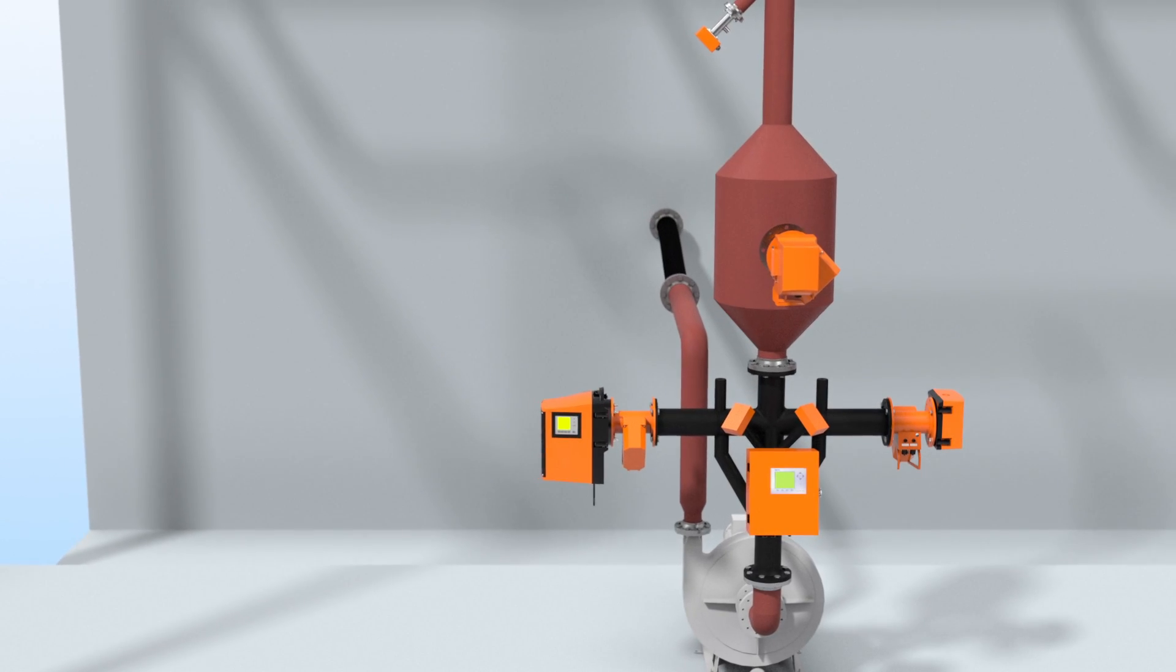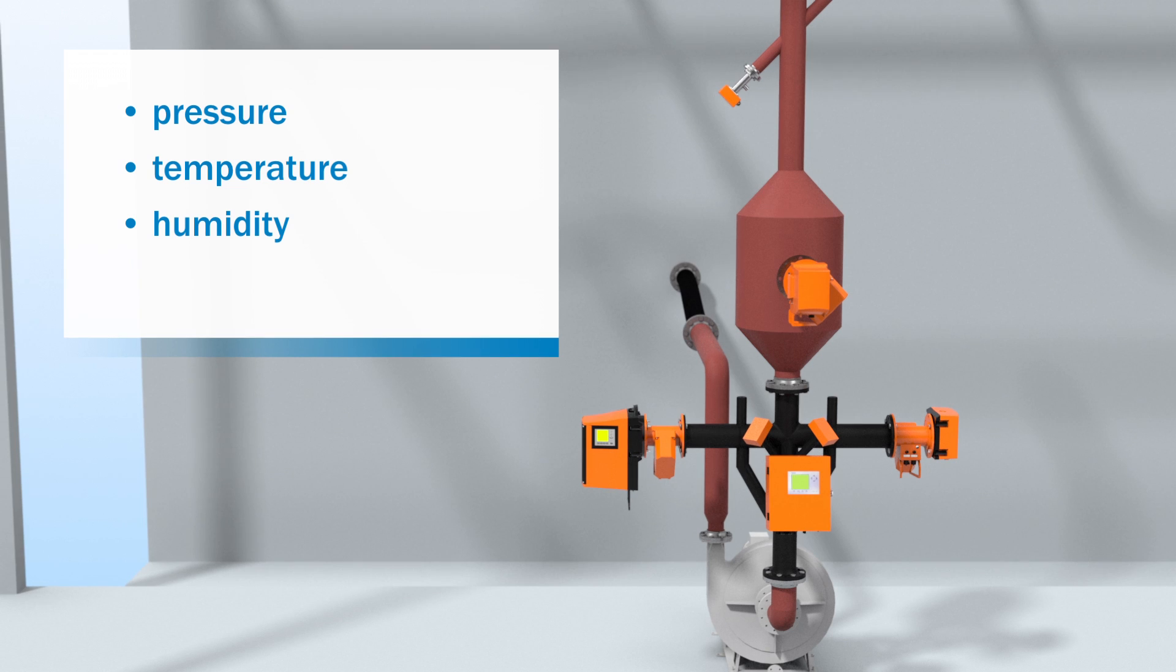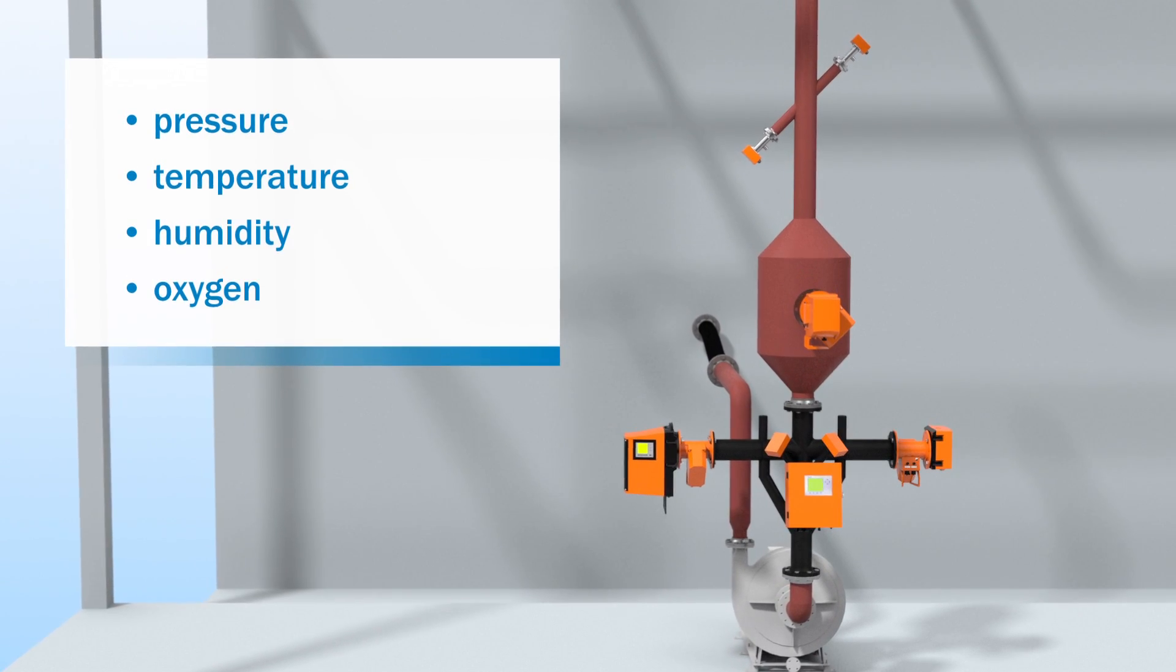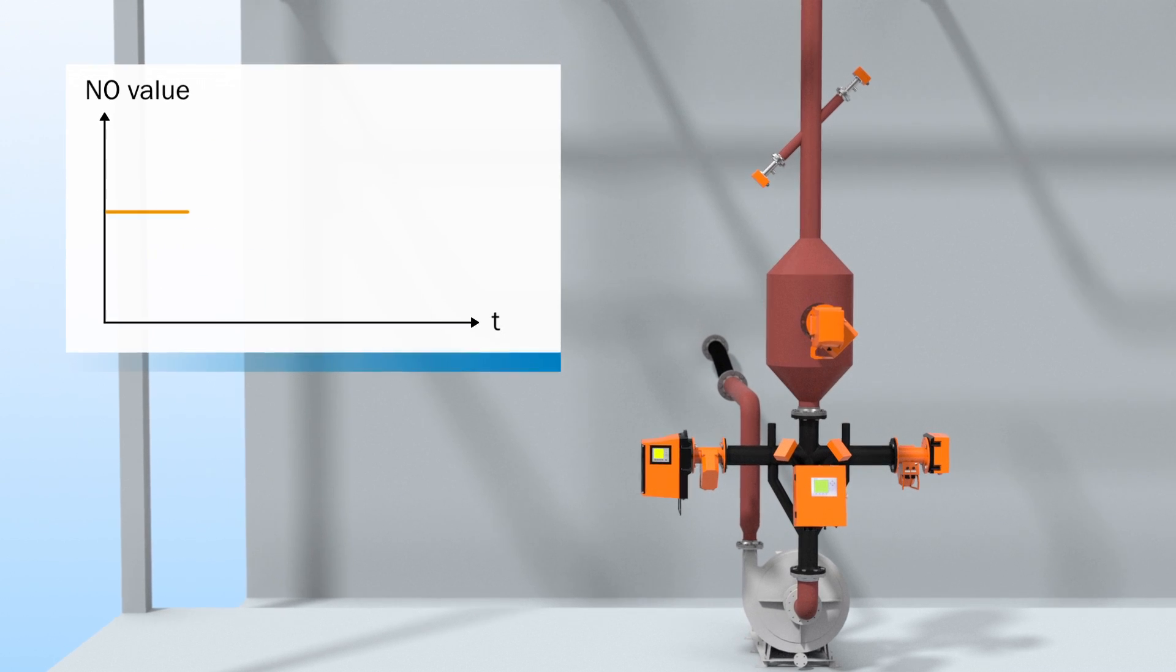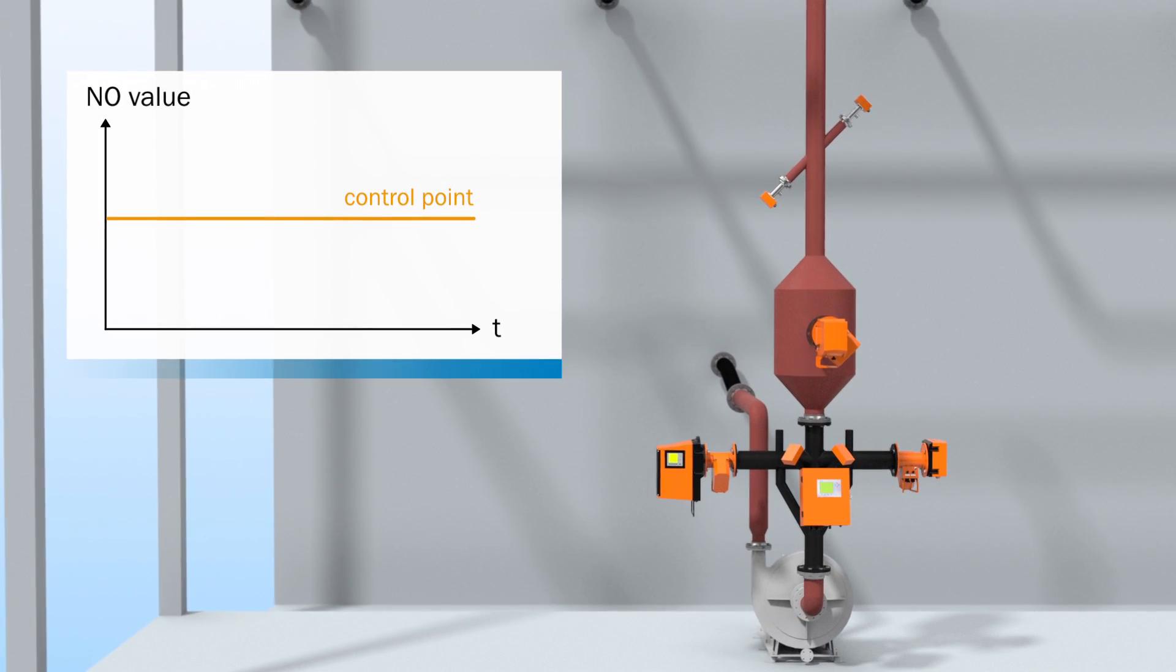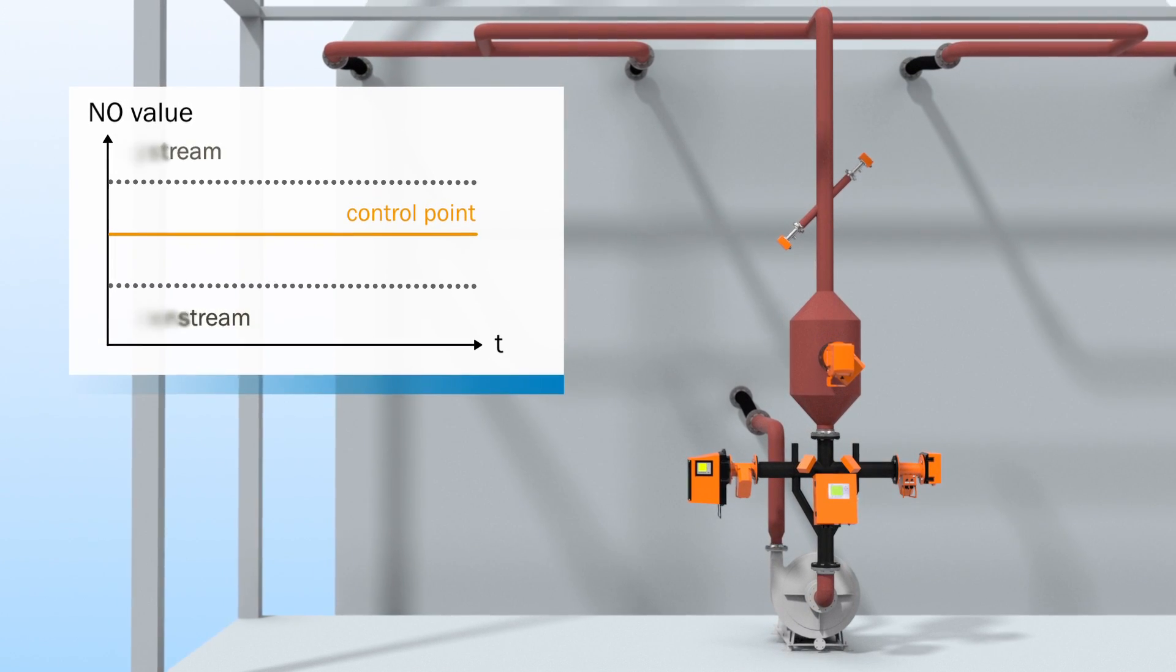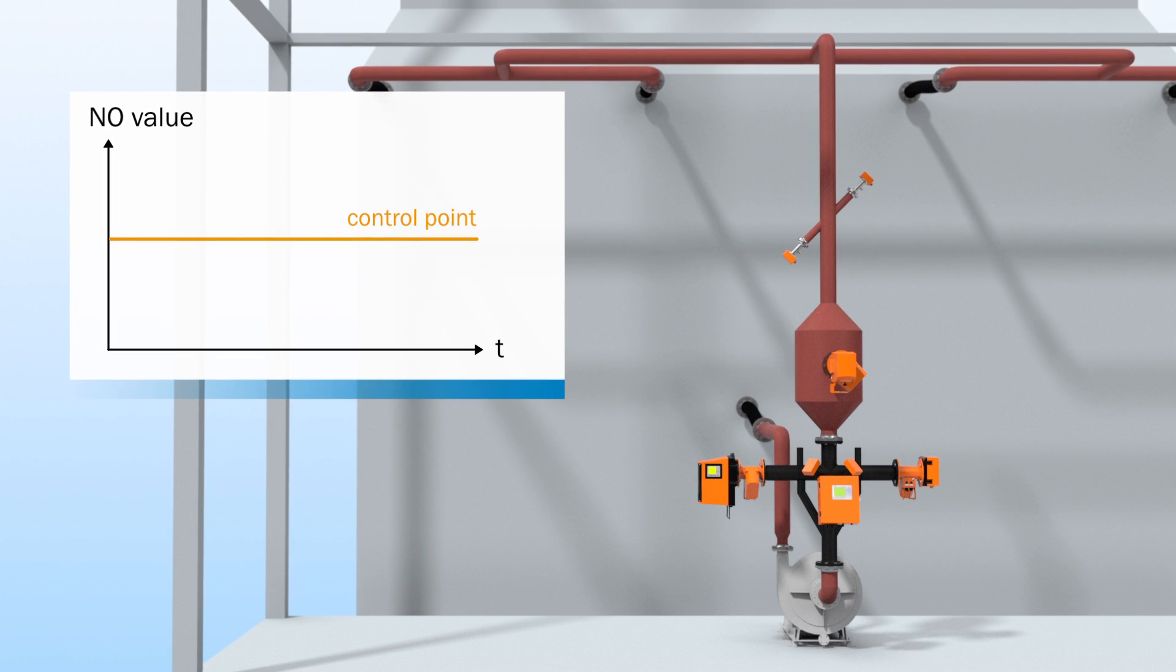Additional measurements such as pressure, temperature, humidity and oxygen can be included to report the values under normalized conditions. This ensures that the values from both measuring points up and downstream of the SCR are comparable and guarantees optimum system control.